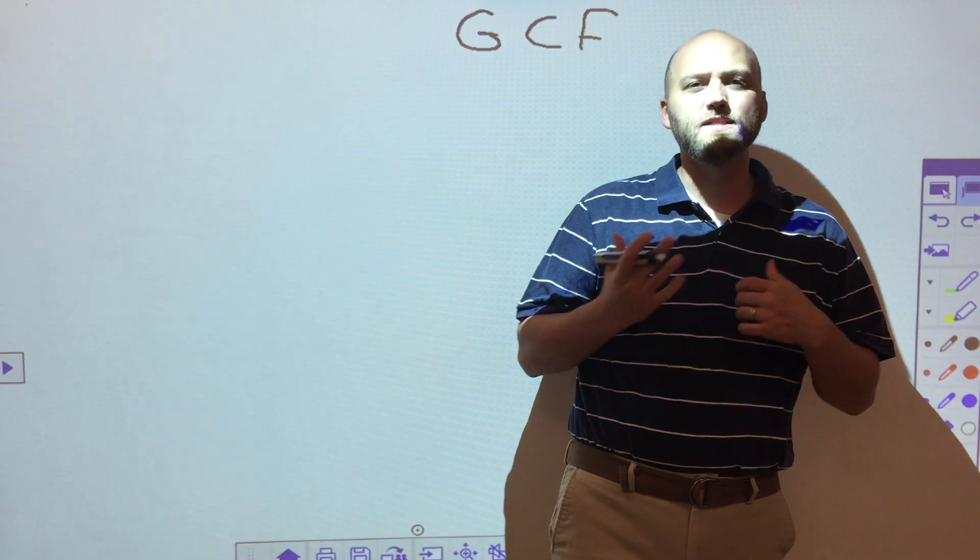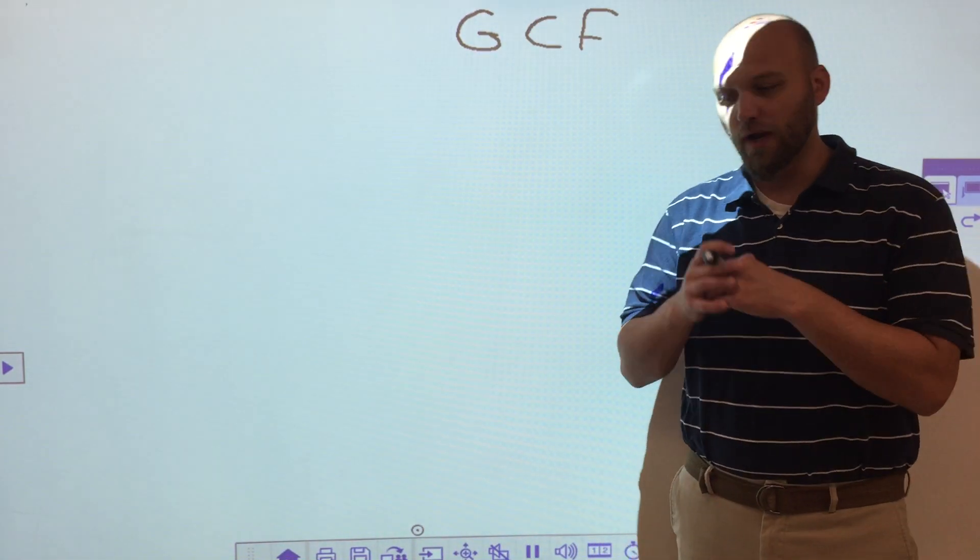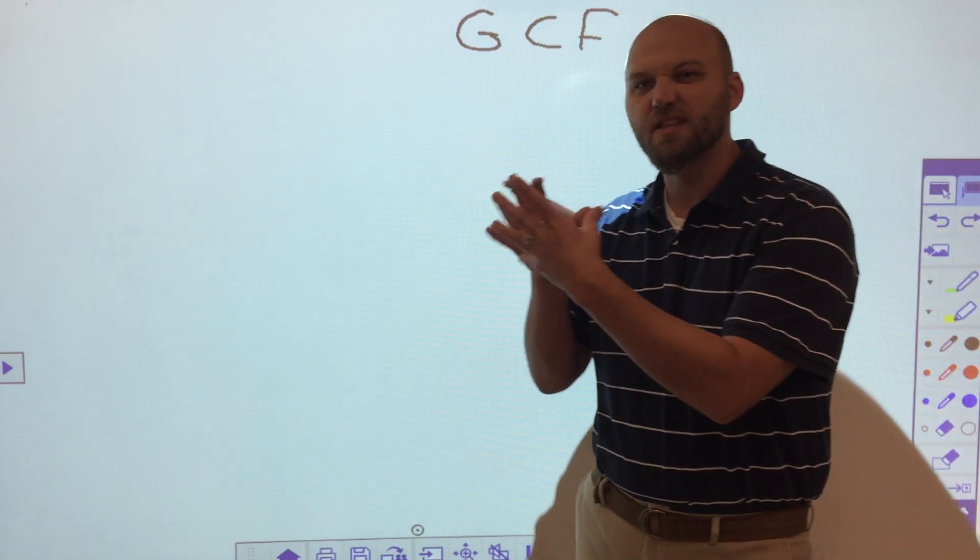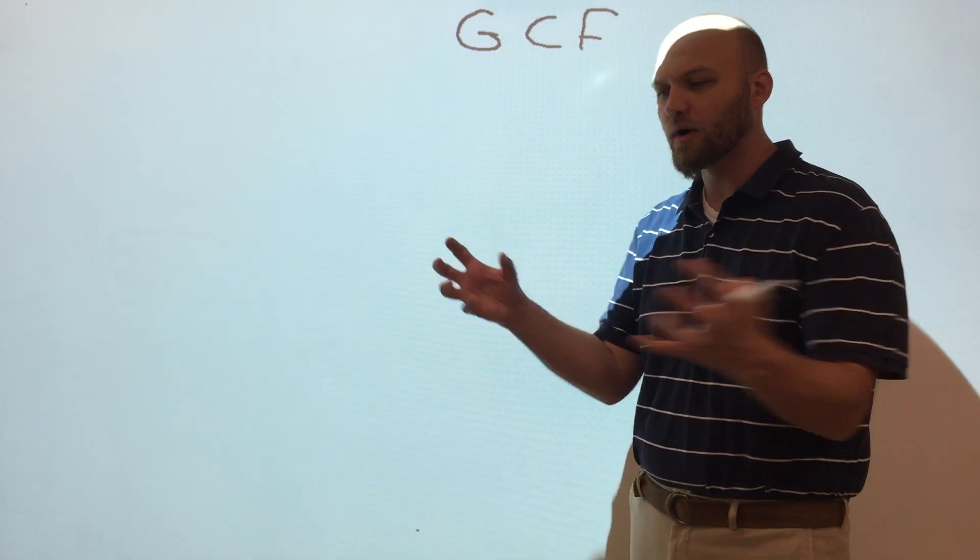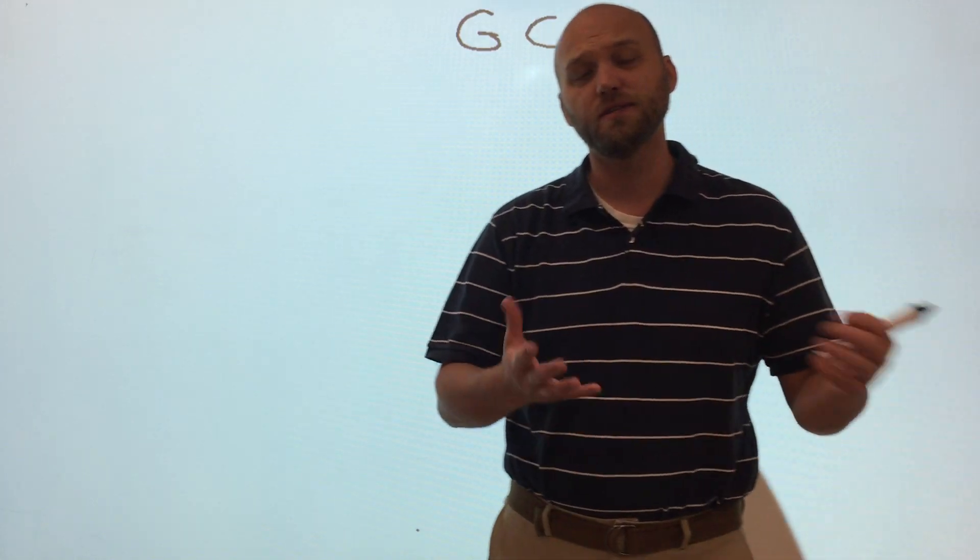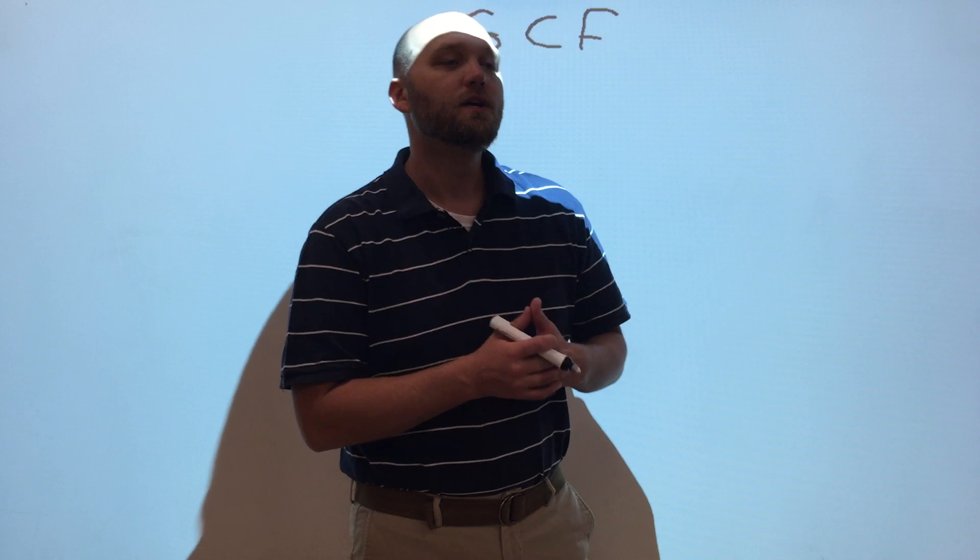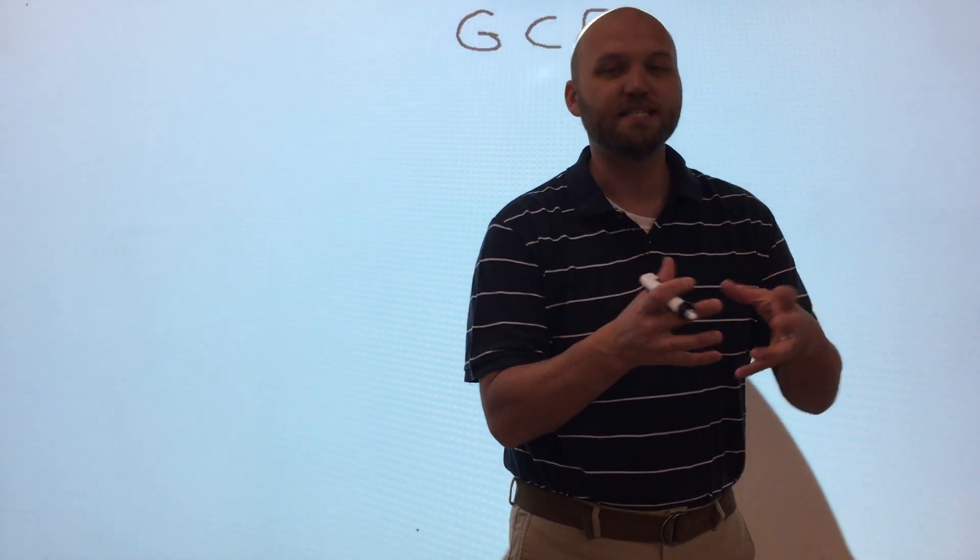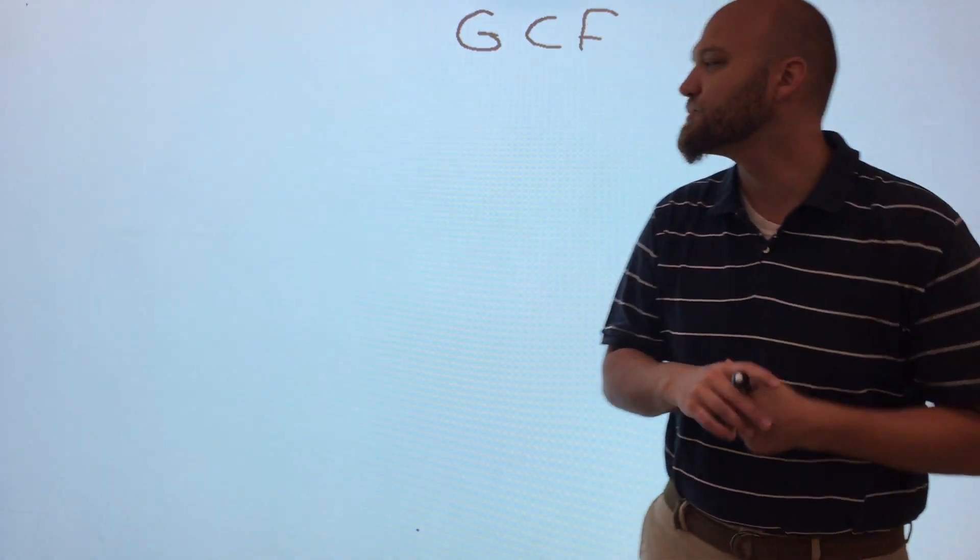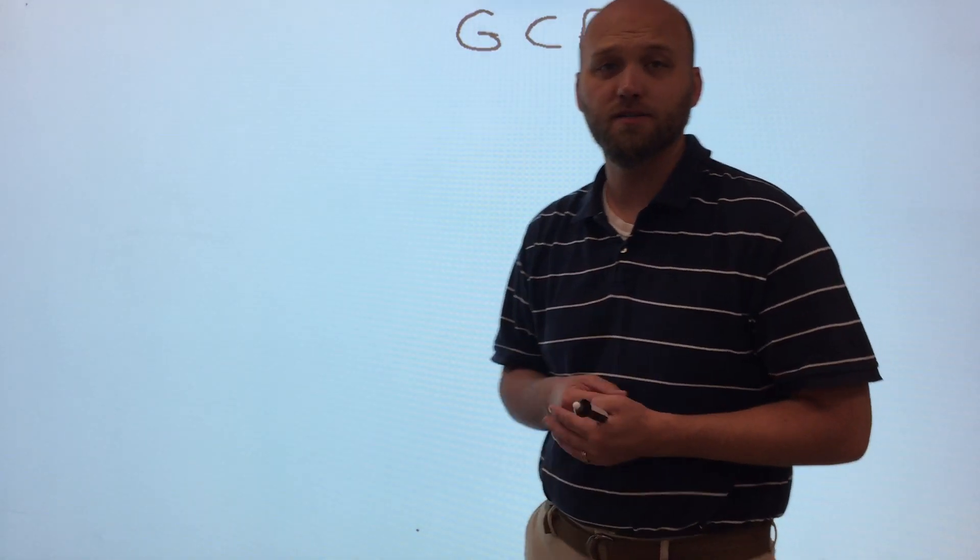So if you go back two lessons, you realize that factors were numbers that can be multiplied together to get an original number, or it's numbers that a large number can be broken down to. So with least common multiple, we're organizing chunks so that we don't have any waste. We're making organized groups. Greatest common factor, we're breaking things into even chunks.